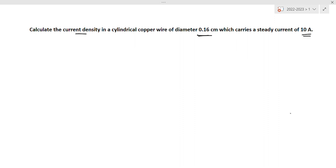So, current density. For a cylindrical copper wire, the cross-sectional area is circular area, so pi r square meter square.